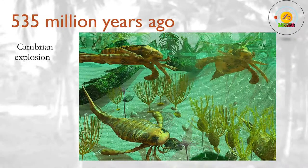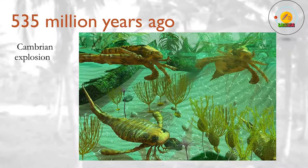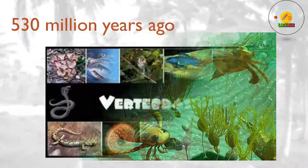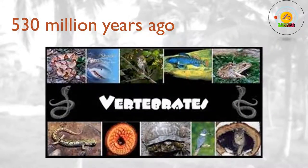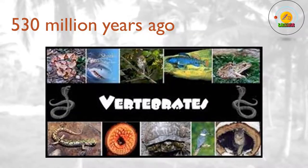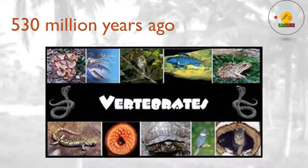535 million years ago? The Cambrian explosion begins, with many new body layouts appearing on the scene, though the seeming rapidity of the appearance of new life forms may simply be an illusion caused by a lack of older fossils. 530 million years ago? The first true vertebrate — an animal with a backbone — appears. It probably evolves from a jawless fish that has a notochord, a stiff rod of cartilage, instead of a true backbone. The first vertebrate is probably quite like a lamprey, hagfish, or lancelet. Around the same time, the first clear fossils of trilobites appear — these invertebrates proliferate in the oceans for the next 200 million years.